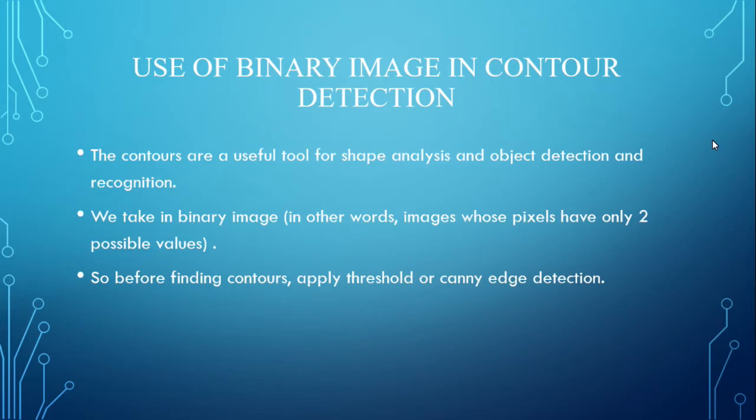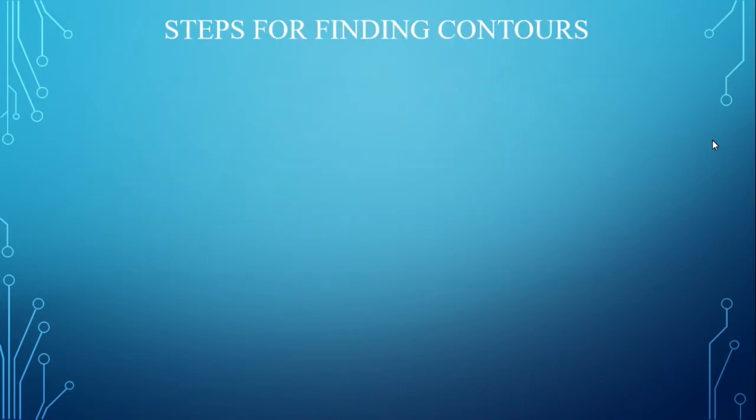Contours are useful tools for shape analysis, object detection, and recognition. We take in a binary image — that is, images whose pixels have only two possible values, 0 and 1, such as a grayscale image. Before finding contours, apply thresholding or Canny edge detection, as we will show in the further slides.